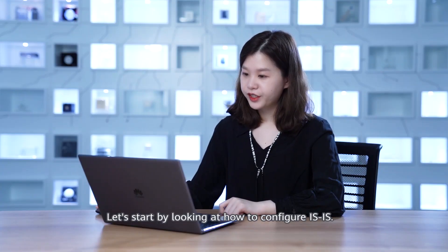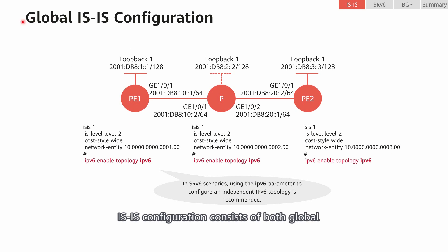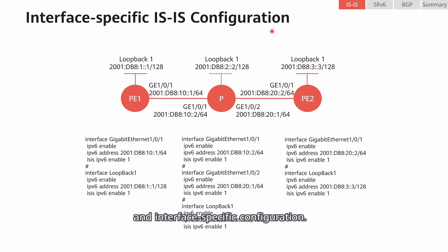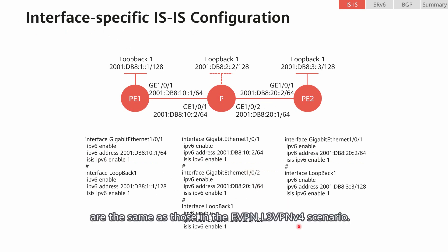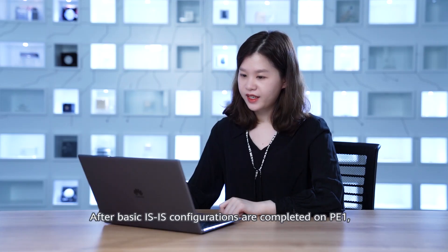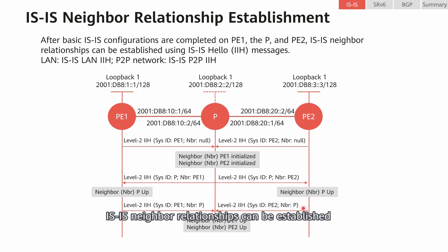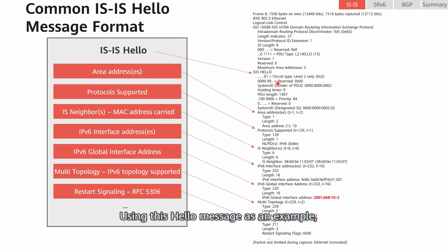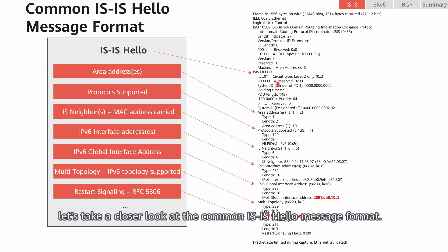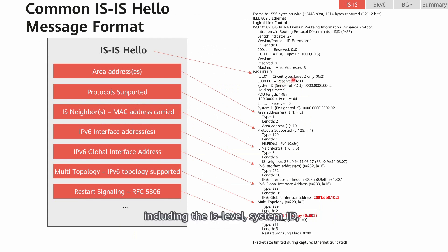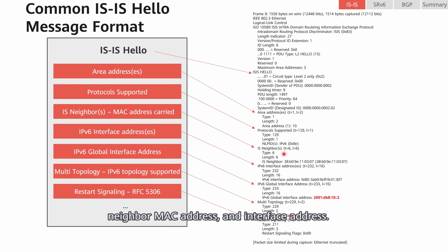Let's start by looking at how to configure IS-IS. IS-IS configuration consists of both global and interface-specific configuration. The configurations in this part are the same as those in the EVPN L3 VPNv4 scenario. After basic IS-IS configurations are completed on P1, P, and P2, IS-IS neighbor relationships can be established using IS-IS Hello messages. Using this Hello message as an example, let's take a closer look at the common IS-IS Hello message format. The message carries multiple pieces of information, including the IS-IS level, system ID, area address, supported protocol, neighbor MAC address, and interface address.